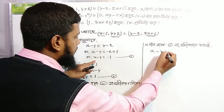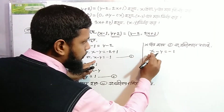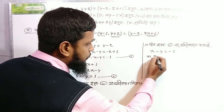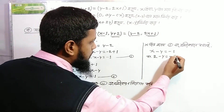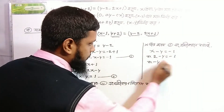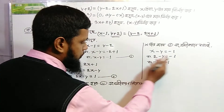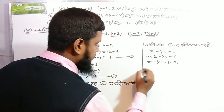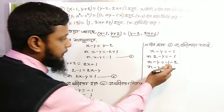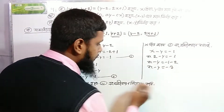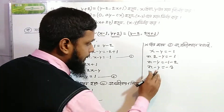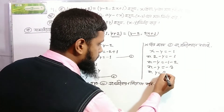Minus x minus y is equal to minus 1. 2 minus 1 is equal to minus 1. Minus y equals minus 3 minus 1, which is equal to minus 2. So minus y equals minus 3. Now minus 3.